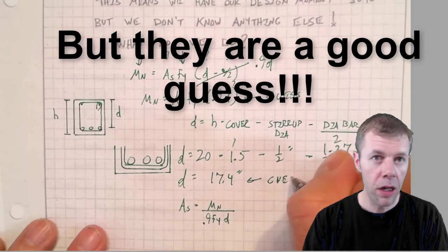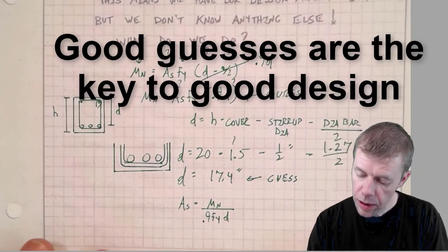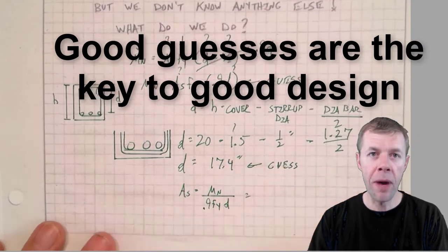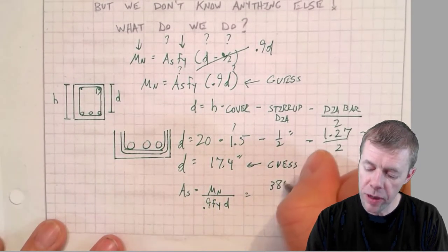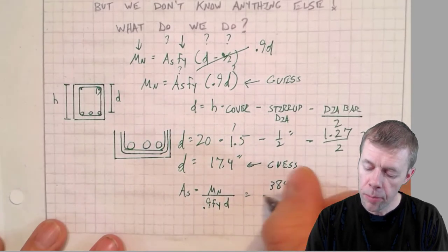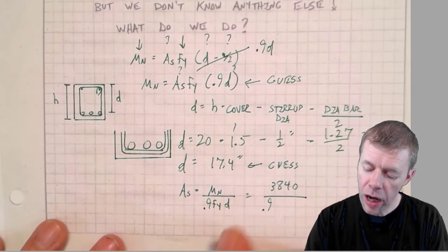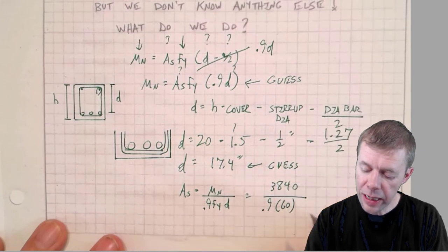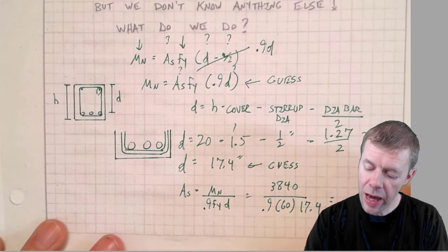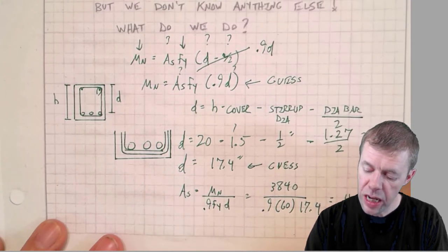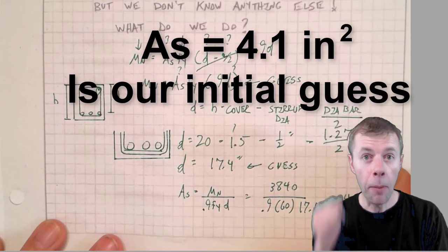Now this is my guess, and we're going to check it or verify it coming up. So let's solve for the amount of steel I need. 3,840 was my moment, 0.9, Fy is 60, and my d guess was 17.4. If I solve all of that I get 4.1 inches squared.